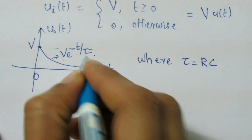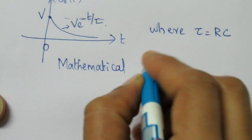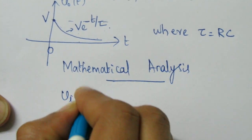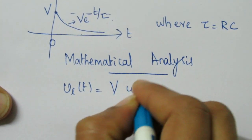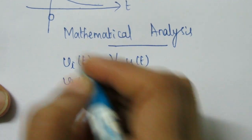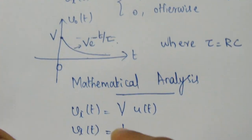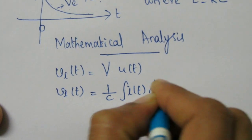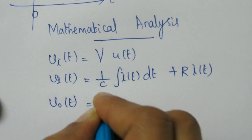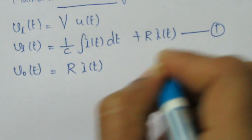Now let's see how we can mathematically derive this output expression. The input voltage is mathematically represented as V into U(t). Writing the input equation with respect to the circuit, where I(t) is the current flowing in the circuit: V_i(t) = (1/C) integral of I(t) dt + R·I(t). The output equation is written as V_out = R·I(t), because the output is taken parallel to the resistor. This is equation 1 and equation 2.